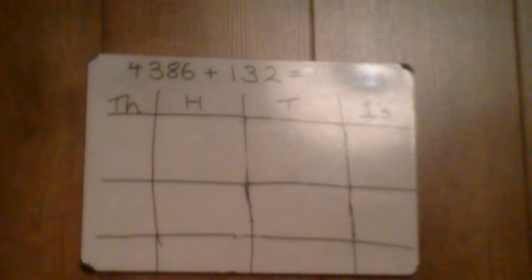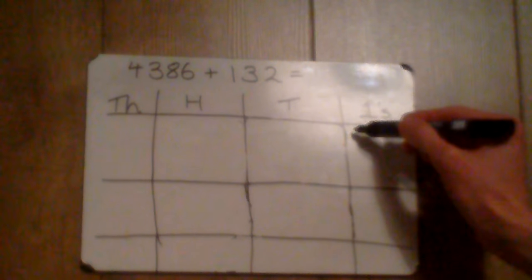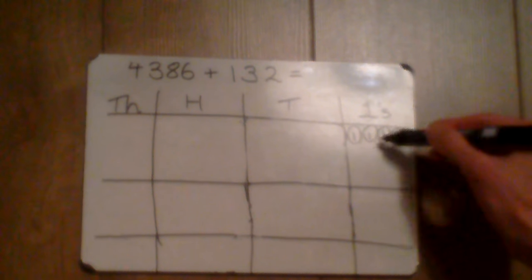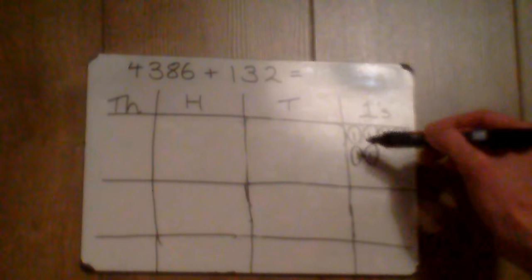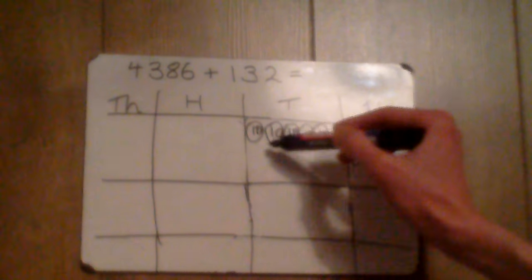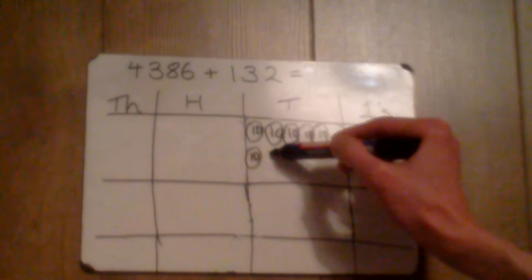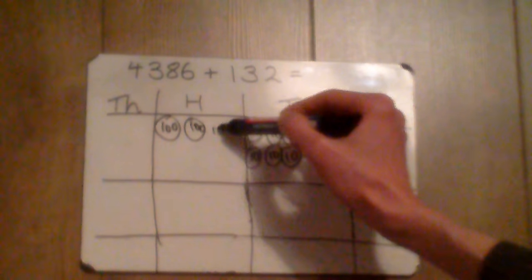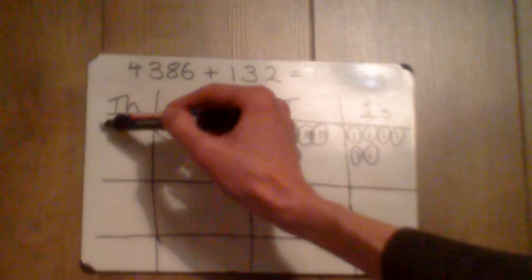The first step is to draw your numbers into a place value grid. So in 4386 we have 6 ones, we have 8 tens, 3 hundreds, and 4 thousands.